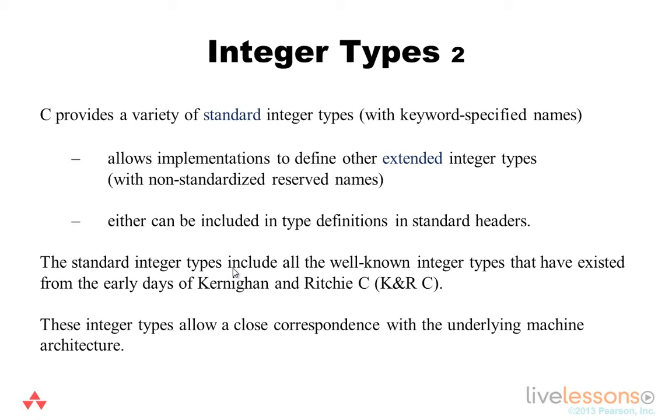These standard integer types include all the well-known integer types that have existed from the early days of K&R C, including for example short, long, and int. Those integer types are primarily defined to provide a close correspondence with the underlying machine architecture, so that you can have a close correspondence to the existing register and word sizes on a given platform.